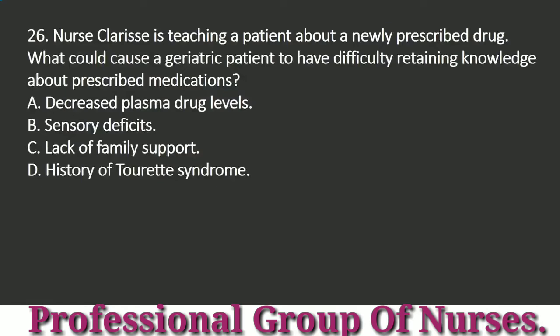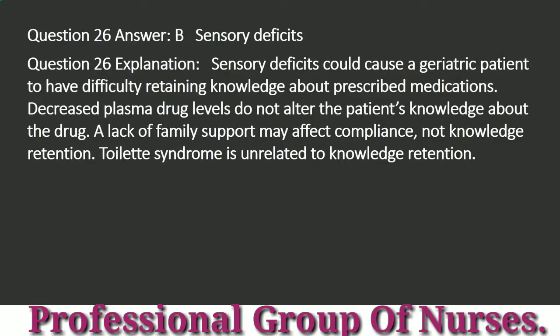Question 26: Nurse Clarice is teaching a patient about a newly prescribed drug. What could cause a geriatric patient to have difficulty retaining knowledge about prescribed medications? Explanation: Decreased plasma drug levels do not alter the patient's knowledge about the drug. A lack of family support may affect compliance, not knowledge retention. Tourette syndrome is unrelated to knowledge retention.